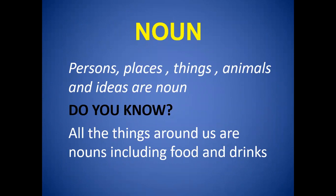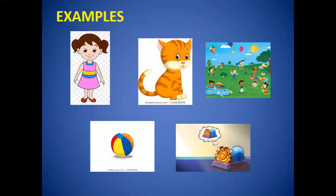Do you know all the things around us are nouns, including food and drinks? The things which you eat are also nouns. The things which you drink are also nouns, like juices, like cake. Here are some examples. This is a girl — girl is the noun for a person. Cat is the noun for an animal. Park is the noun for a place. Ball is the noun for a thing. And here you see a cat is dreaming — an idea.